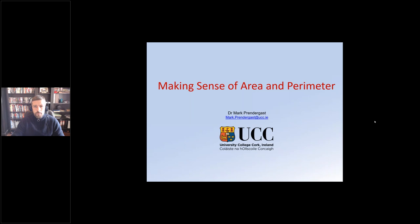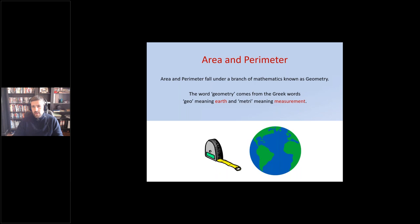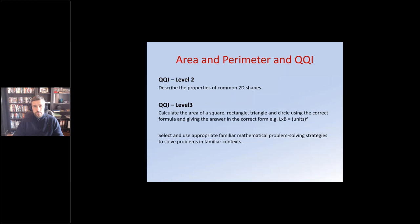Area and perimeter fall under the branch of mathematics known as geometry. A fun fact that might grab your students' attention: the word geometry comes from two Greek words — geo meaning earth and metri meaning measurement — so geometry is really measurement of the earth. It's the branch of mathematics that deals with measurement in terms of volume, length of lines, angles, and area and perimeter fall under that. That's going to be our focus for today. We're going to focus primarily around QQI levels two and three.